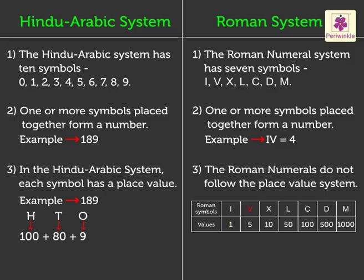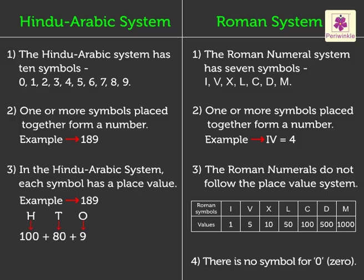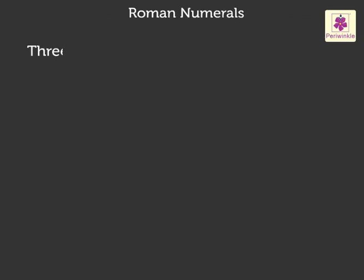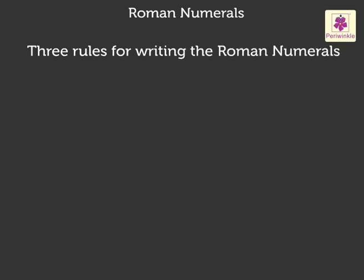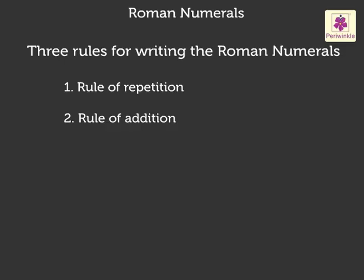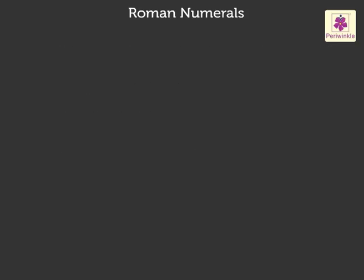V has a value of five, and so on, till M has a value of one thousand. Remember, there is no symbol for zero in this system. We need to remember three rules while writing Roman numerals: one, rule of repetition; two, rule of addition; three, rule of subtraction. Let us learn each rule one by one.